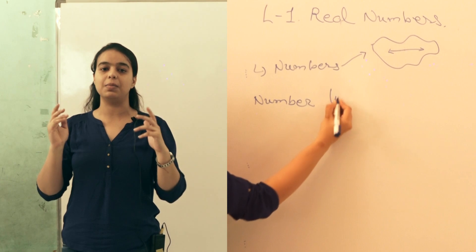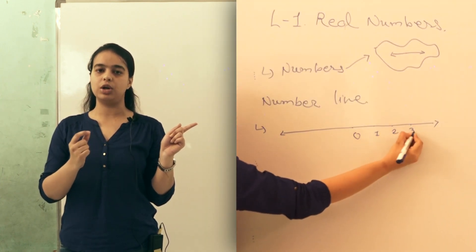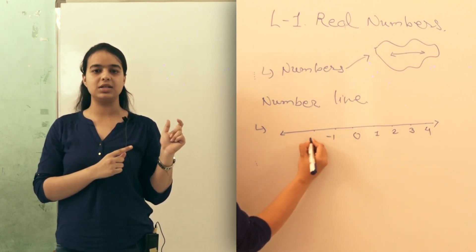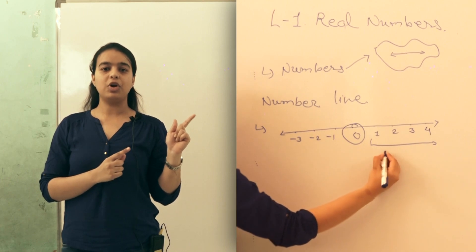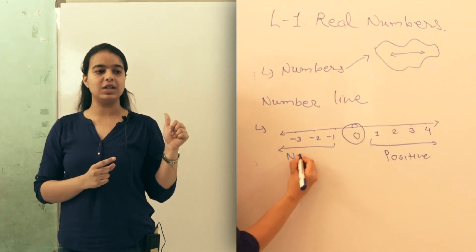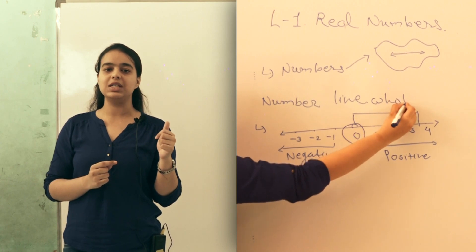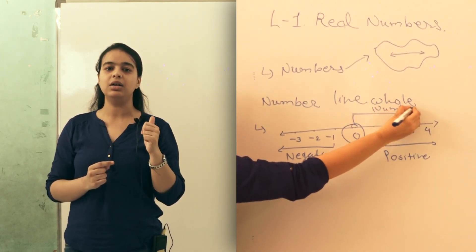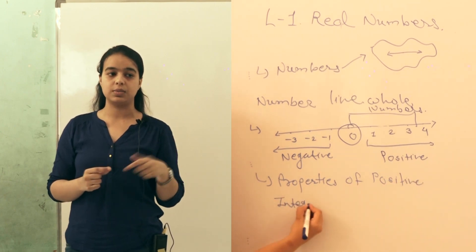We can indicate numbers using number lines. Here I am showing you a number line presenting 0, 1, 2, 3, 4 and so on on this side, and minus 1, minus 2, minus 3 and so on on the other. As you know, 0 is neither positive nor negative. From 1, 2, 3, 4 and so on, all numbers are positive integers; from minus 1, minus 2, minus 3 and so on, negative integers. Adding 0 along with the positive integers — 0, 1, 2, 3, 4 and so on — all these numbers are whole numbers. In this chapter, we are going to discuss properties of positive integers.